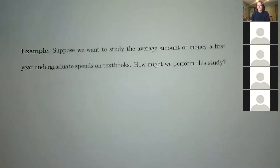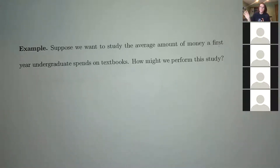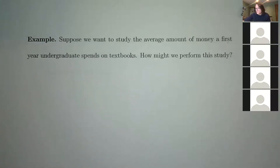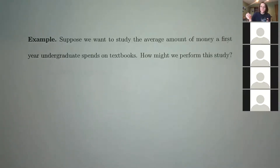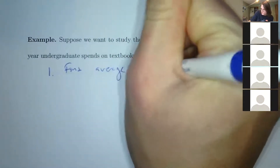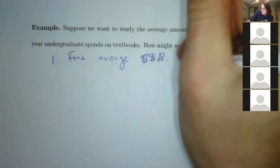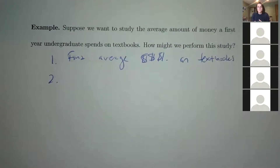Second example: suppose we want to study the average amount of money a first-year undergraduate spends on textbooks. Most examples involve people because it's easiest to think about, but there's no requirement for that. Step 1 — state your goal: find the average money spent on textbooks. Step 2 — choose a sample of college students.